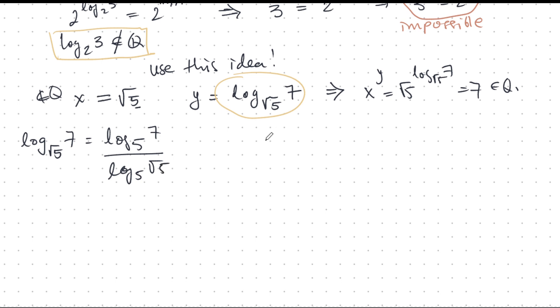Let me use some log tricks and rewrite this. This is log 5, 7 over log 5 root 5. And here I used log base a of b is log base c of b over log base c of a. So this gives us log 5, 7 over one half, and that's 2 times log 5, 7. So I know that this is irrational.